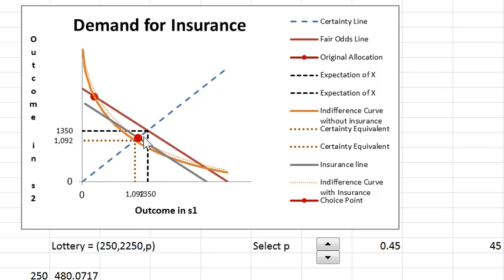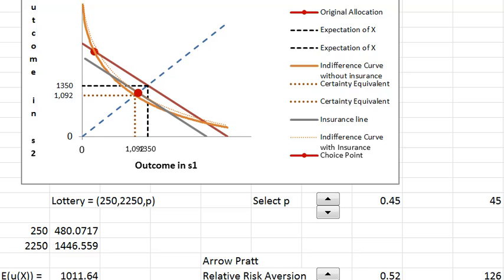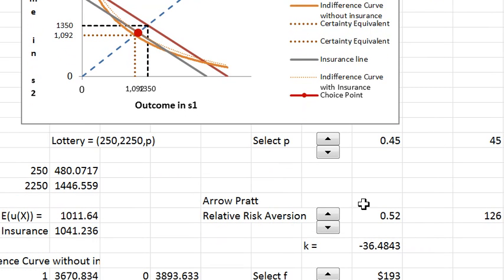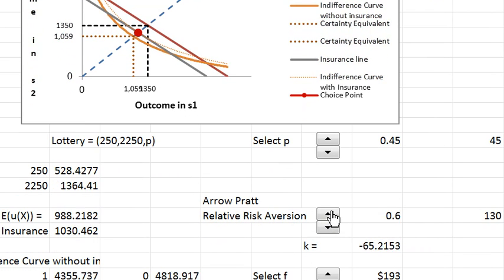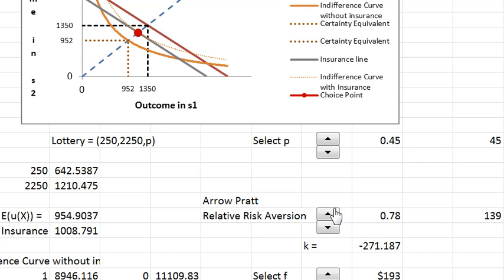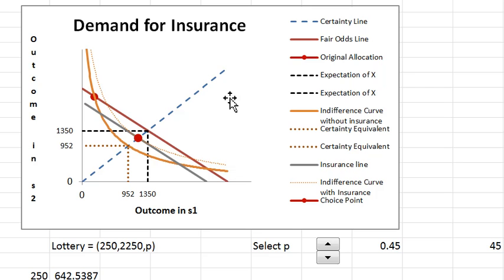Buying insurance is pushing this consumer to a higher indifference curve. Just to make the picture clear, I'm going to increase the Arrow-Pratt measure of risk aversion so that we can make the insurance graph more clear.